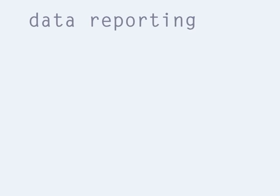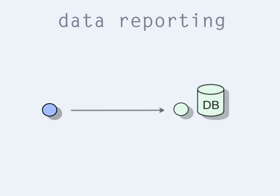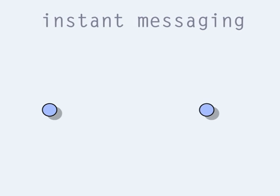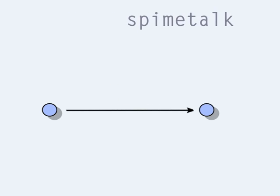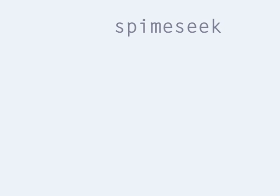What can OpenSpime do for you? OpenSpime enables data reporting — that is to say, collecting data from entities to a database. It enables instant messaging between entities, also known as SpimeTalk. Finally, it allows you to seek for data that has been produced by a particular Spime across the overall OpenSpime network. Since this enables seeking for Spimes, this functionality is also known as SpimeSeek.